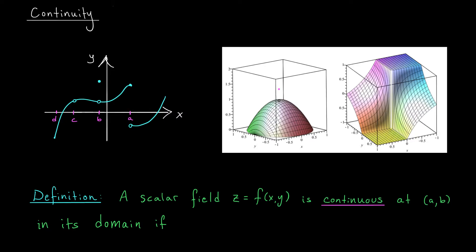At x equals b, we again have a situation where the graph has a break, so it feels like the function should not be continuous. But the issue is not that the limit doesn't exist — as we approach from the left or from the right, we're coming into the same value. The problem, however, is that that value is not the value of our function at x equals b. So not only does the limit have to exist for continuity, it has to match the value of the function.